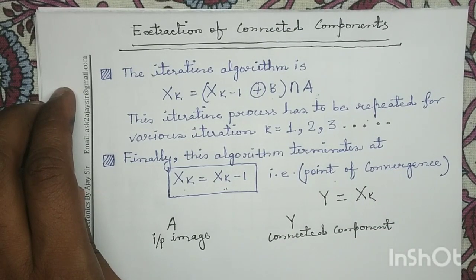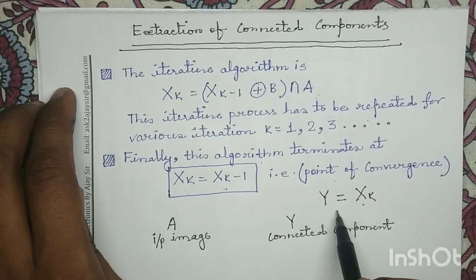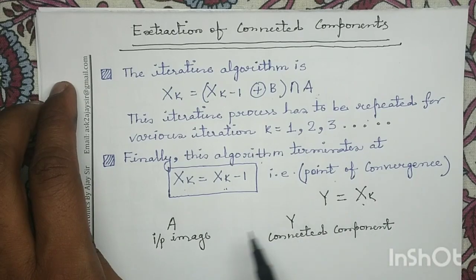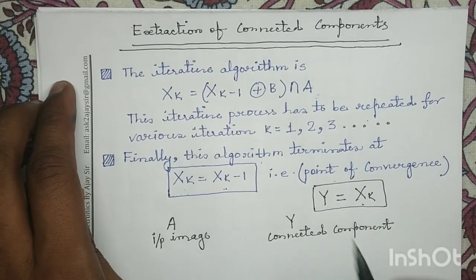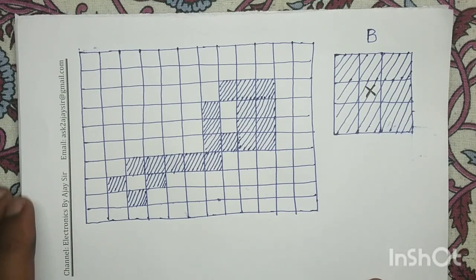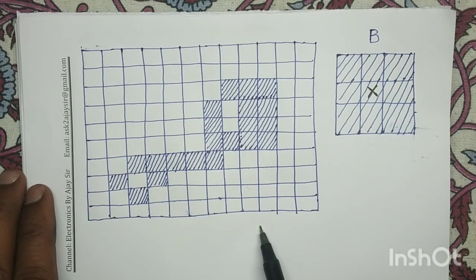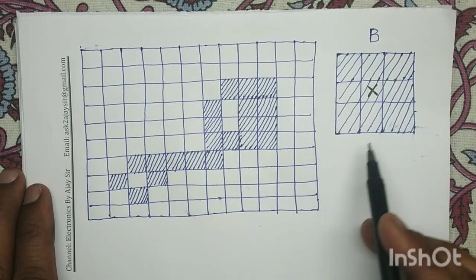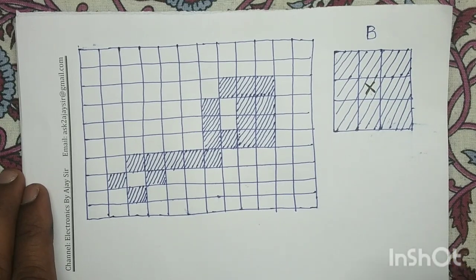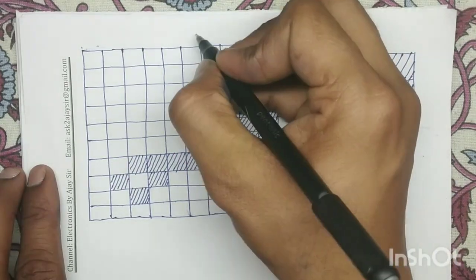So when the point of convergence is met and the algorithm terminates, x_k is my extraction of connected component for the given input image A. To understand this operation, let us take an example. An input digital image is given, and we will perform the extraction of connected component using this structuring element. The center pixel of the structuring element is logic 1, and its 8 neighboring pixels are also logic 1.